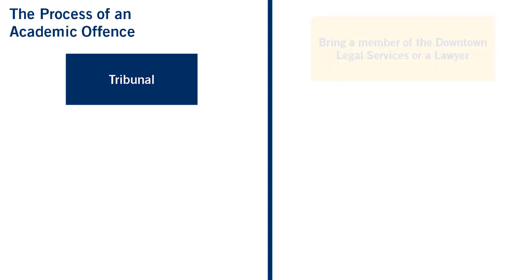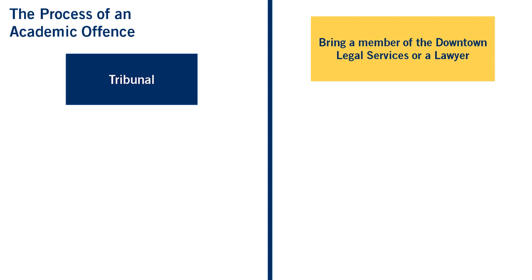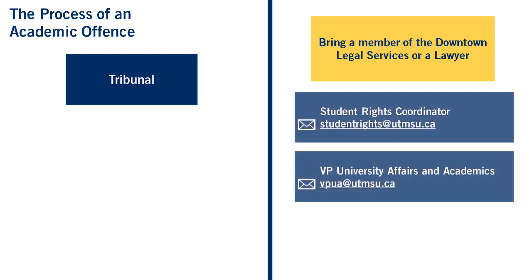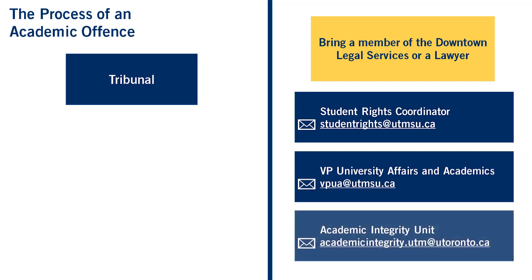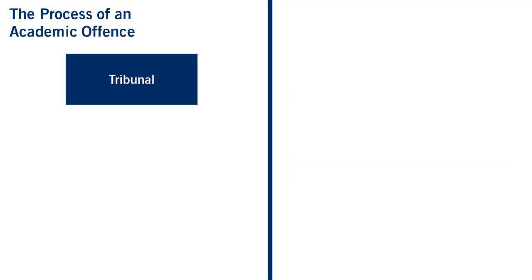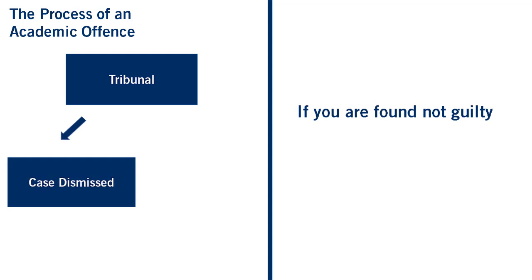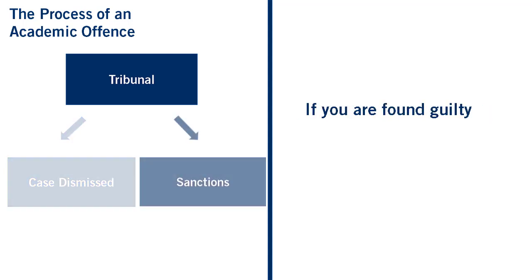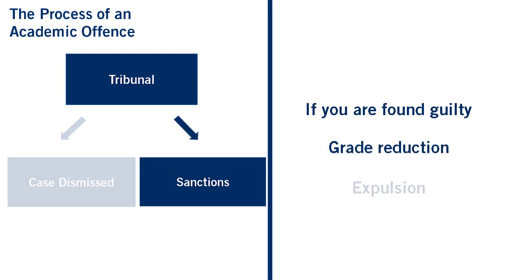It is highly recommended that you have a representative of Downtown Legal Services or a lawyer with you. If you're not sure how to access these resources, connect with UTMSU or the Academic Integrity Unit. If you're found not guilty, the case is dropped. If the tribunal finds that you are guilty of the academic offense, they will impose sanctions. At the tribunal level, the consequences can range from grade reductions to expulsion from the university, depending on the case.